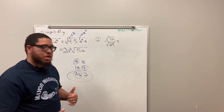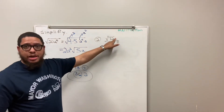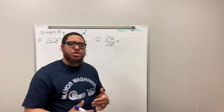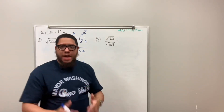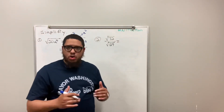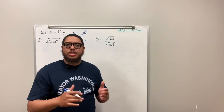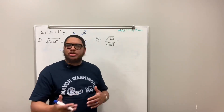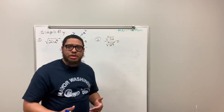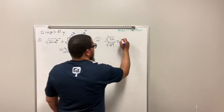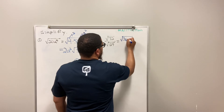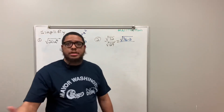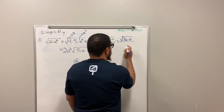If you have a radicand — that's the number inside the radical sign — that has multiple perfect square factors, you want to pick the perfect square factor that's the biggest. Basically the GPSF: the Greatest Perfect Square Factor. That makes life easier. So I'm going to change 72 into 36 times 2. Then I look at the denominator — square root of 64. 64 is a perfect square, so I break square root of 64 down into just 8.